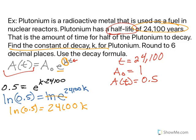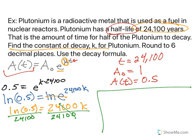So to isolate k, my final step is going to be to divide both sides by 24,100. So in my calculator I'm going to take the natural log of 0.5, put that 0.5 in parentheses, and I'm going to divide by 24,100. That will give me my value for k. And when I do that I end up with negative 0.0002876.